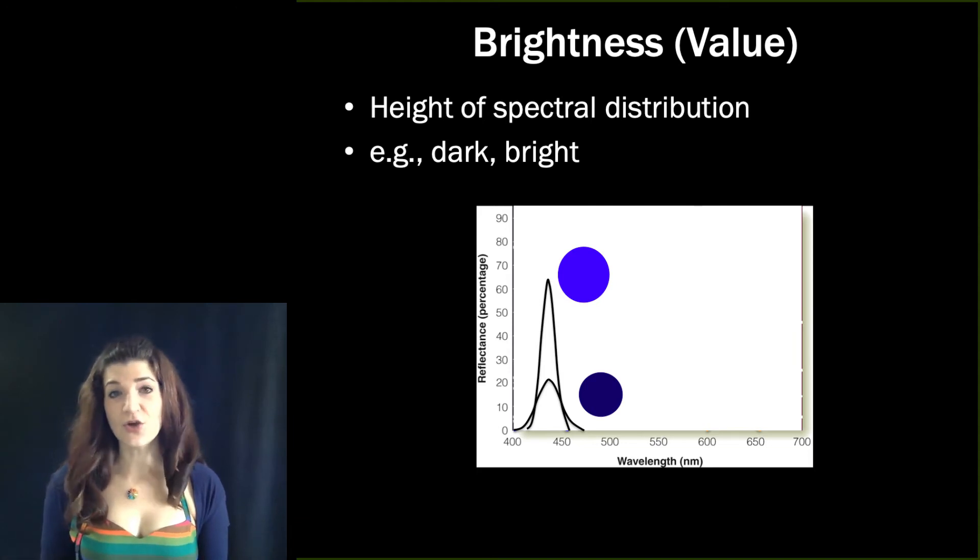Colors can have the same hue and saturation, but differ in how much light they reflect. So this bright blue and this darker blue are both reflecting 500 nanometer light in a relatively narrow band, so they're pretty saturated.